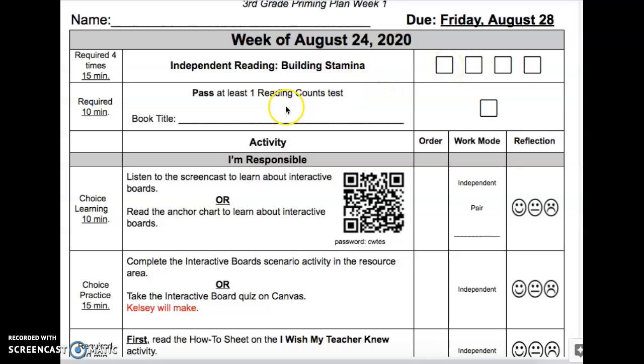Then moving down to the second thing, it's required. It's 10 minutes. That means you need to set your timer for 10 minutes. You put the book title here and you are going to take a reading count. Some of you have done that last year. Some of you, this will be a bit of a refresher and we may have some new students that have never done reading counts. Once you have completed it, you can check it off here.